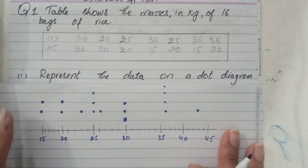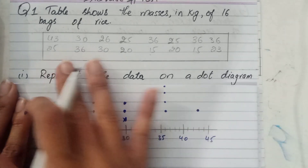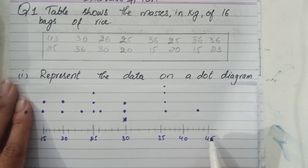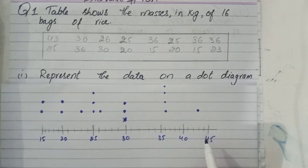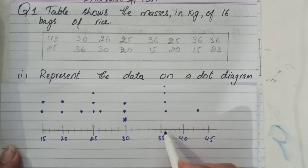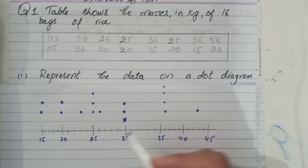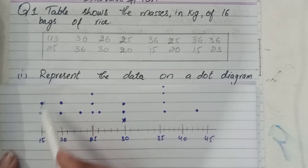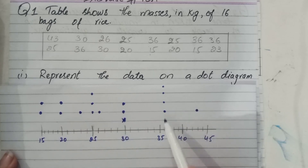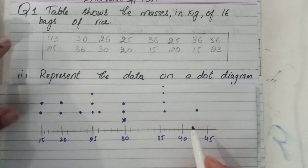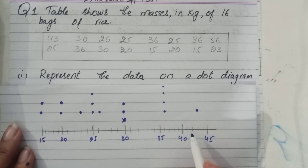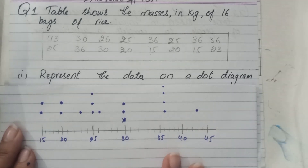That is the dot diagram — all the data is represented in this diagram. We can easily read it: how many bags have mass 36? These are four. How many bags have mass 25? Three. If we want the total number of bags, we count all the dots. We've now completed the dot diagram.